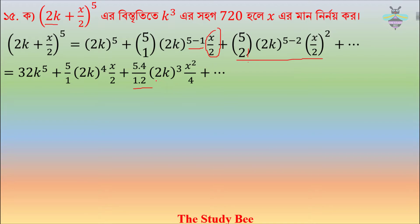Then 2k to the power 5, 2 of 3, then x square, x square, then 2k square, 4.